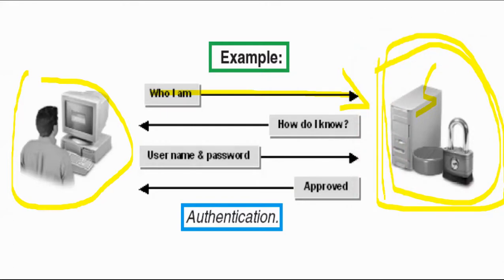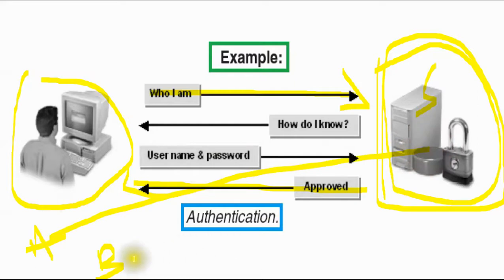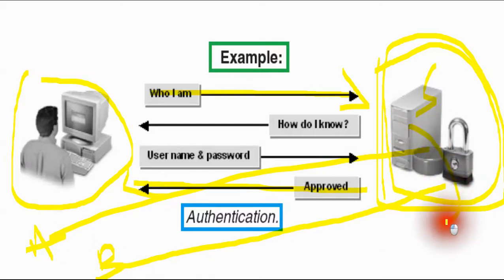The server will have all usernames and passwords in its database. It will check whether this username matches with this password. If that username and password is not matching as per the database, the user won't be able to get access to network resources. Once the username and password is correct, it will say you are approved to access the resources. For example, my name is A and my password is B — it checks whether A belongs to B; if yes, it approves, if not, it gives an error like 'password is not matching.'